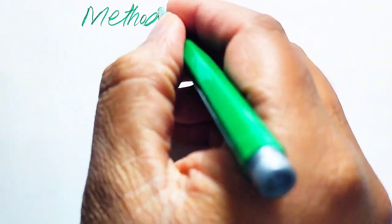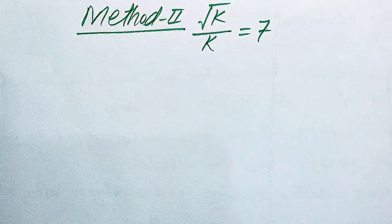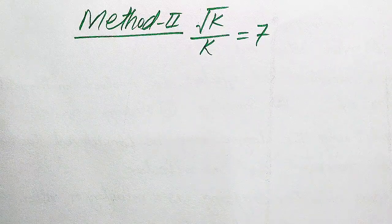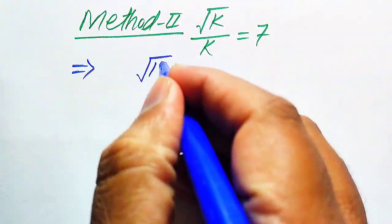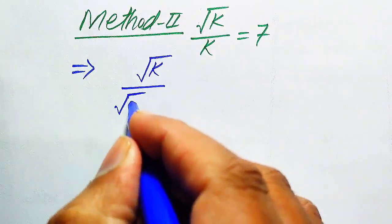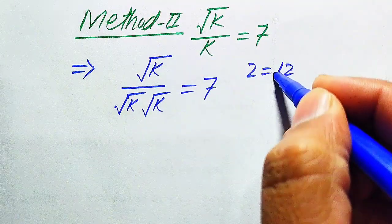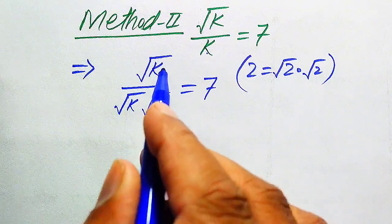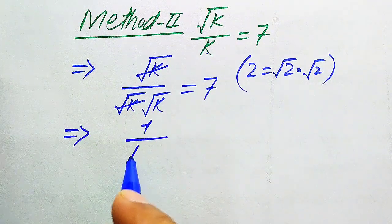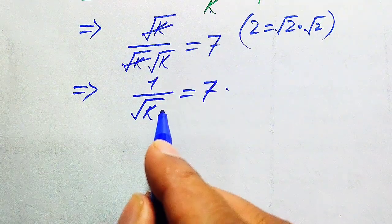Now we solve this problem using the second method. The given equation is: square root of k divided by k equals 7. In this method, we rewrite the denominator k as square root of k times square root of k. The square root of k in the numerator and one square root of k in the denominator cancel, giving us 1 divided by square root of k equals 7.